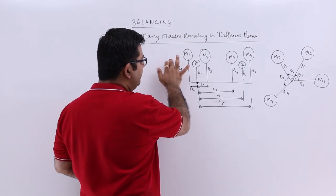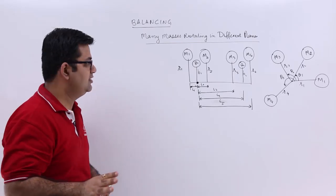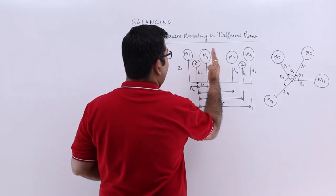So you have M1, M2, M3 and M4 as four disturbing masses which are rotating in different planes.